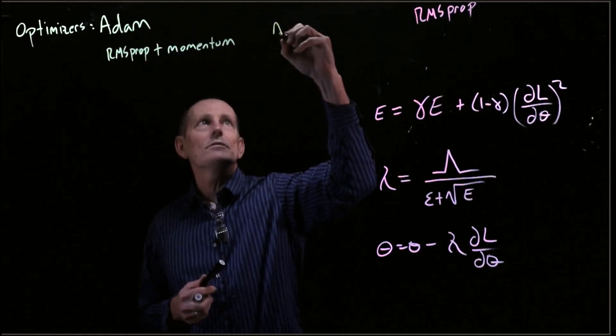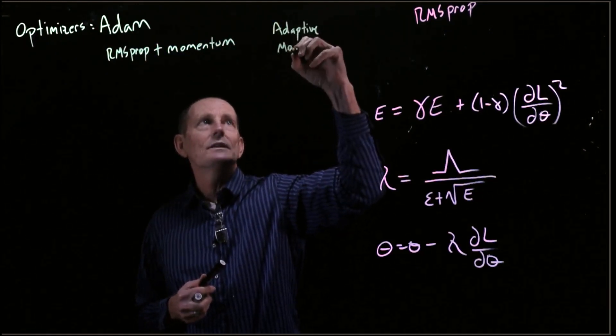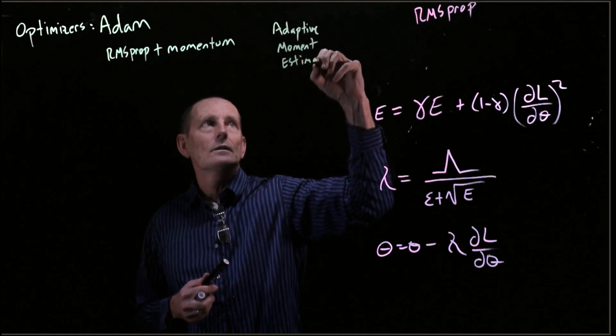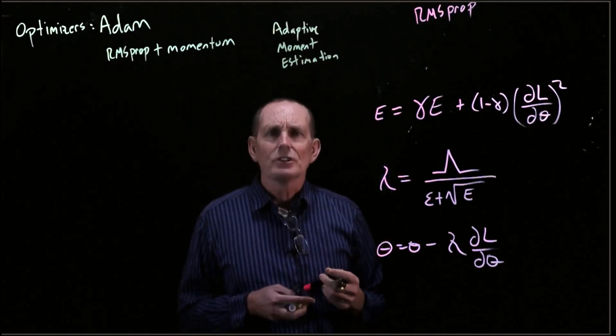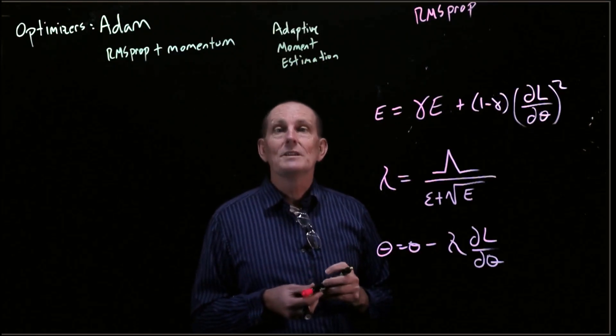Adam stands for adaptive moment estimation. A moment is a statistical term, so there's a first moment, a second moment. The first moment is a mean, the second moment is a variance.